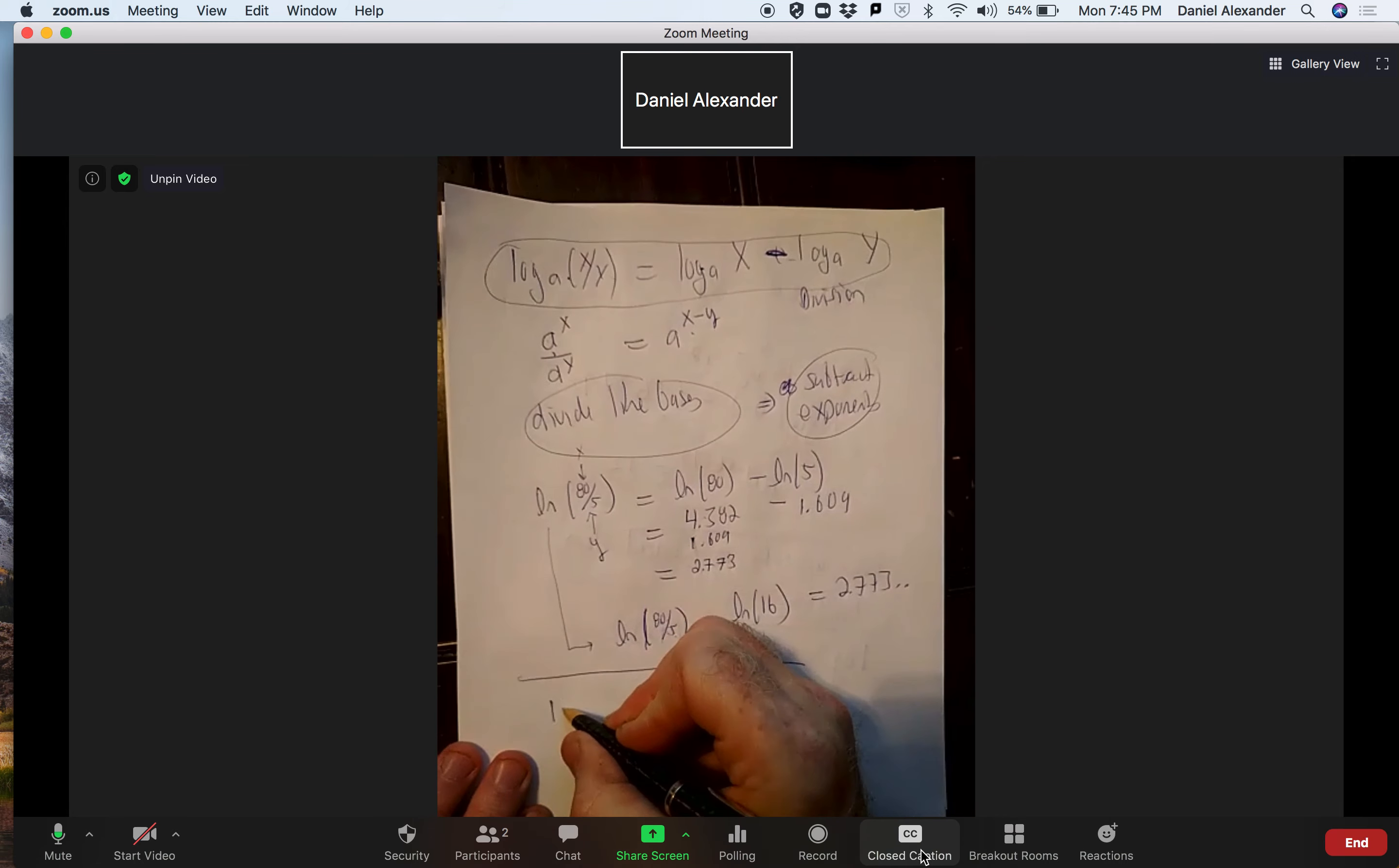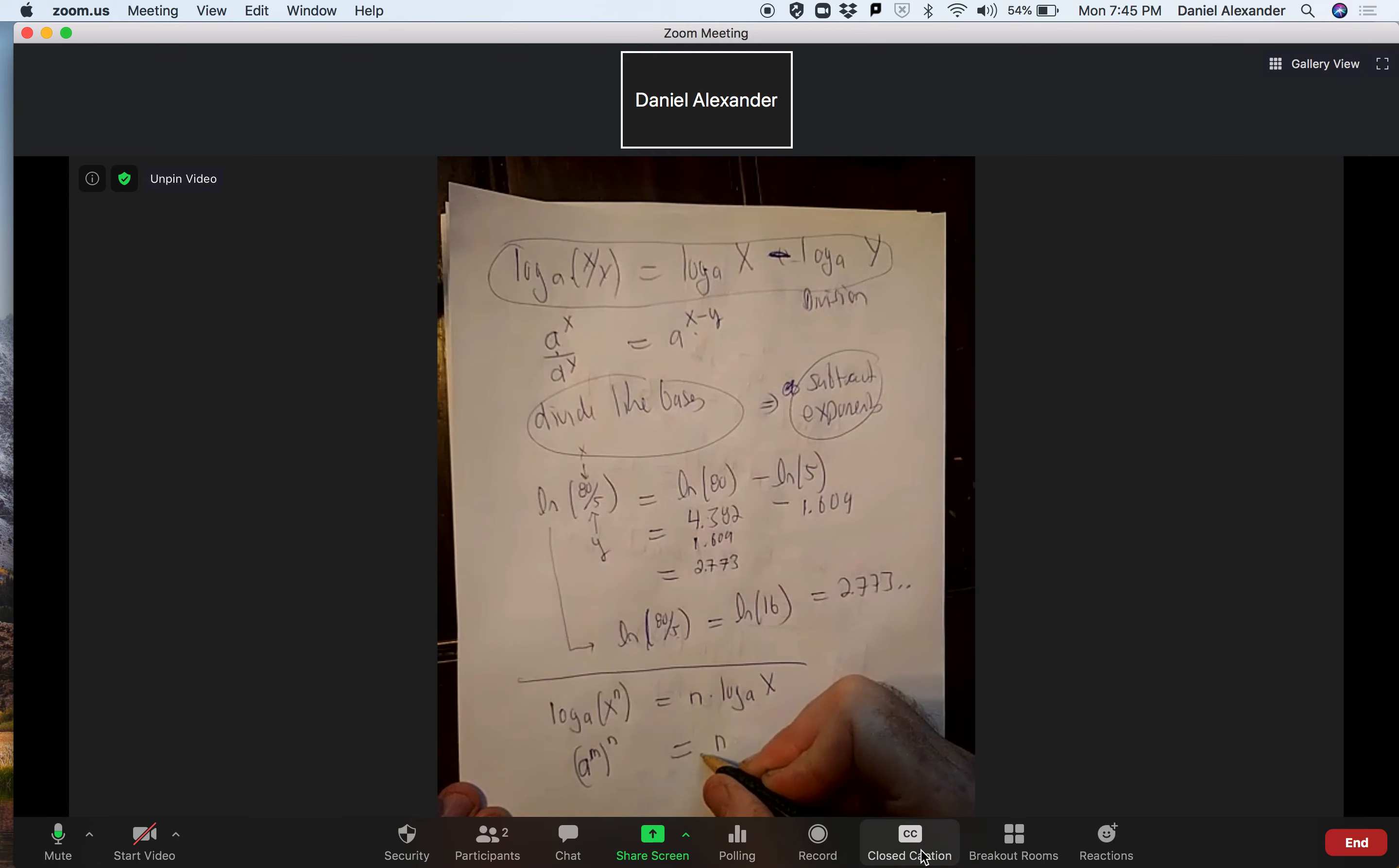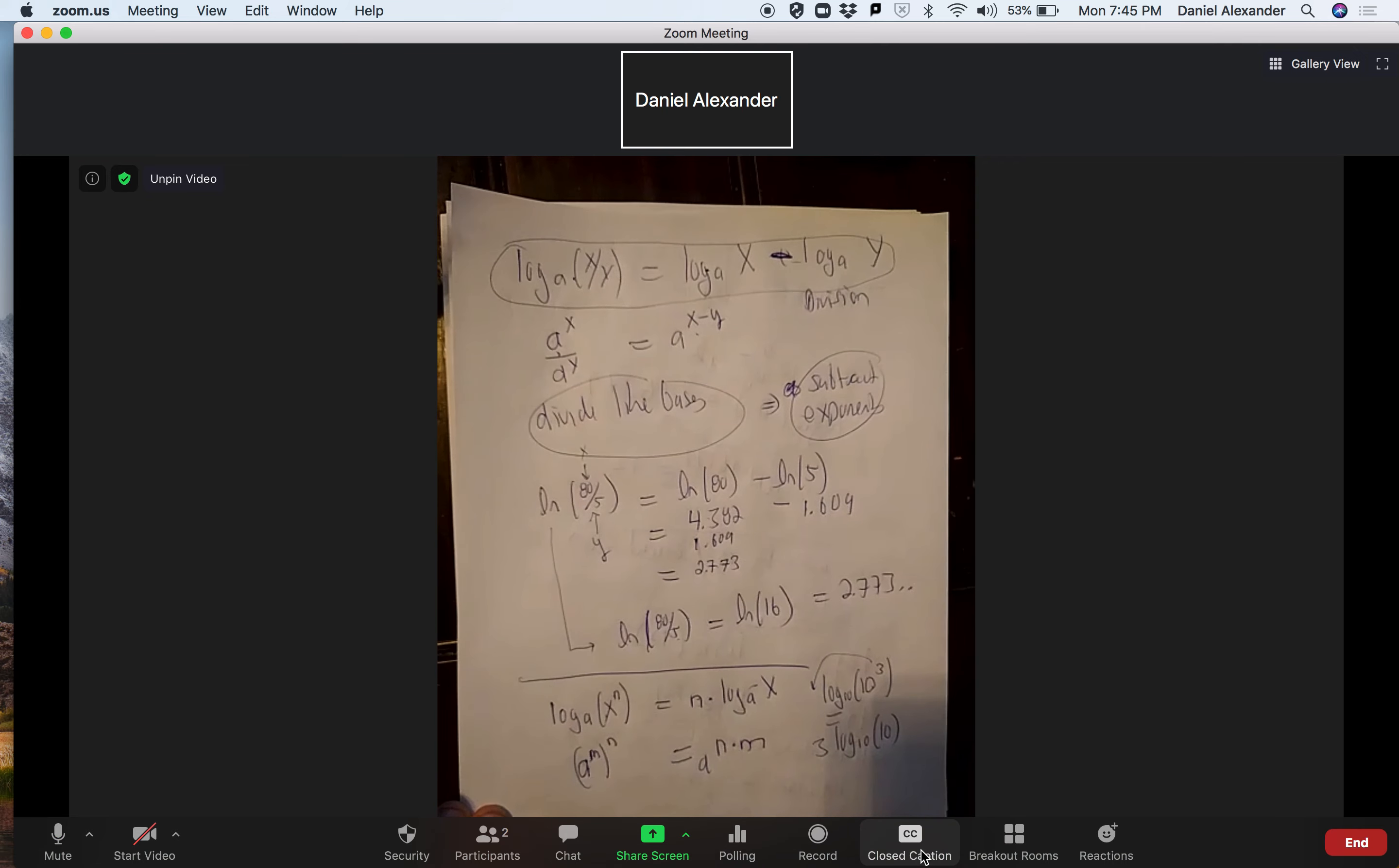And there's one more formula and it's this one: log base a of x to the n. And that's going to be equal to n times natural log of a x. So I think of it this way: when I take a number to the n, how do I do that? I multiply exponents. This is going to be a to the n times m. So again, take a look. So when you have a power to a power, you multiply n times the exponent. So for example, if I had the log base 10 of 10 cubed, I can bring this down and this is equal to 3 times log base 10 of 10. So I'm going to do a couple of examples on the next page.